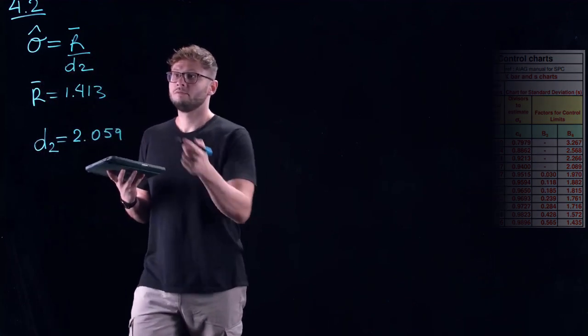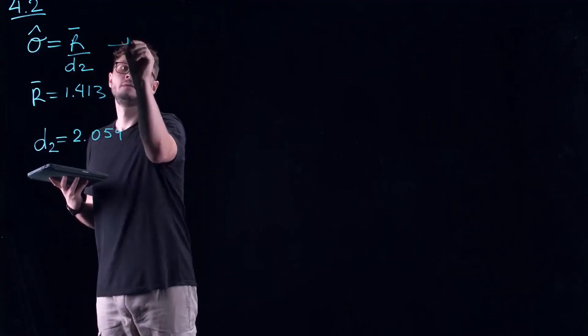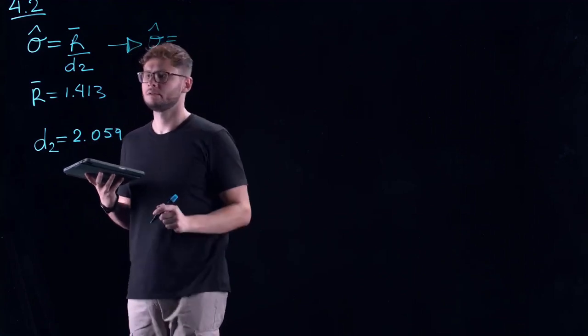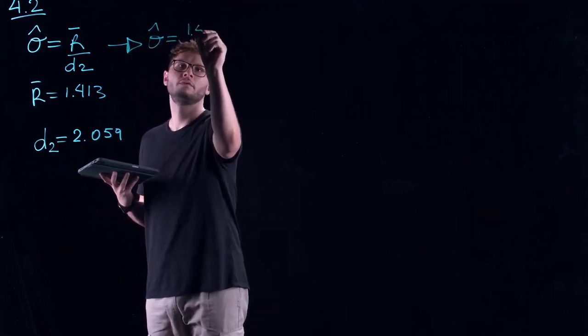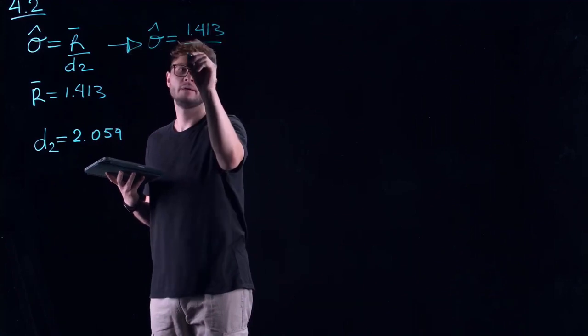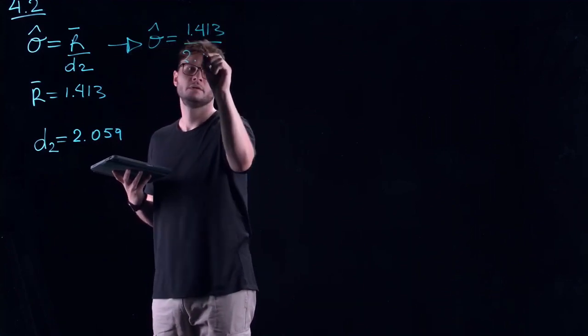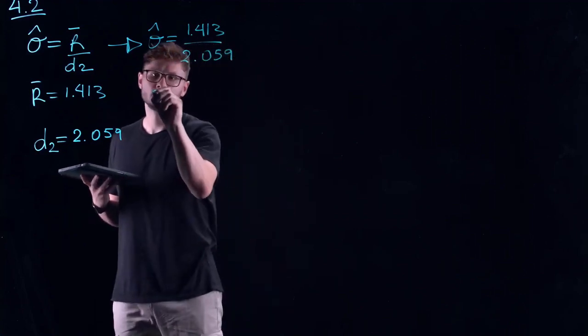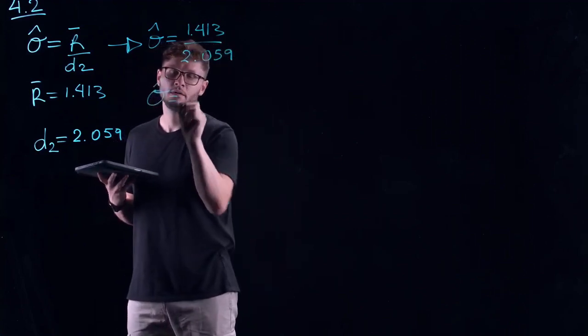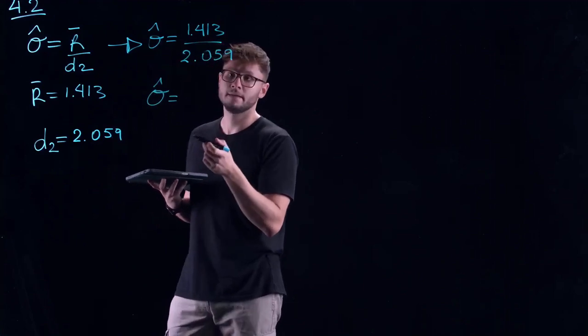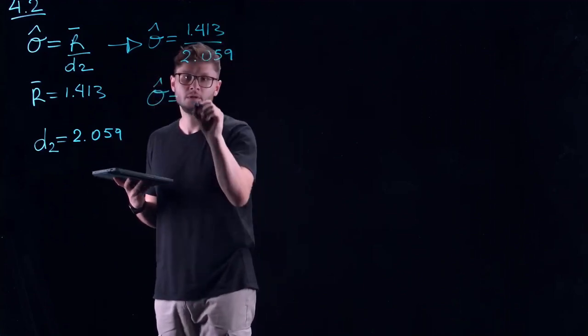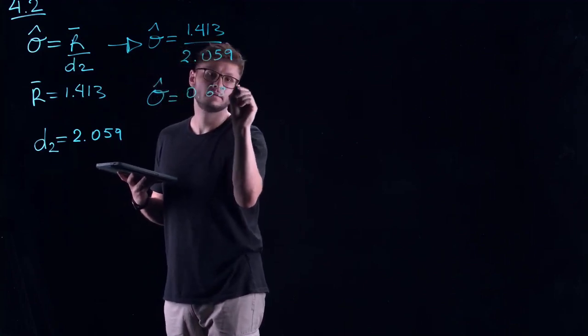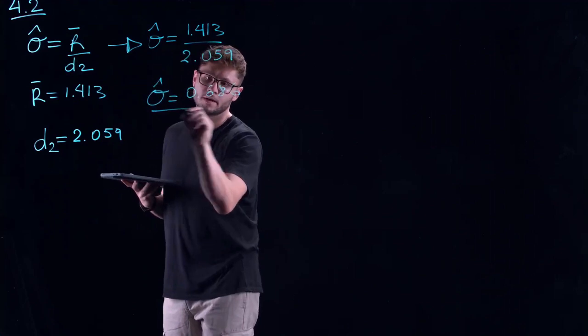From this point, we can just plug in to this formula. We have sigma hat is going to equal 1.413 divided by 2.059. So our sigma hat, our process standard deviation, is going to equal 0.686. And this is our answer.